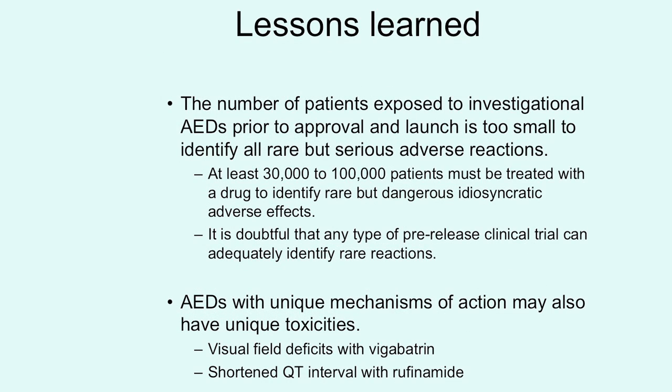The lessons learned are that the number of patients in investigational drug trials is really too small to identify all rare but concerning side effects — you'd need anywhere from 30,000 to 100,000 patients. It's doubtful that any pre-release trial can adequately identify all potential concerns. We also need to remember that anti-epileptic drugs with unique mechanisms of action may have unique toxicities — for example, Vigabatrin with visual field defects and the shortened QT interval with rufinamide.